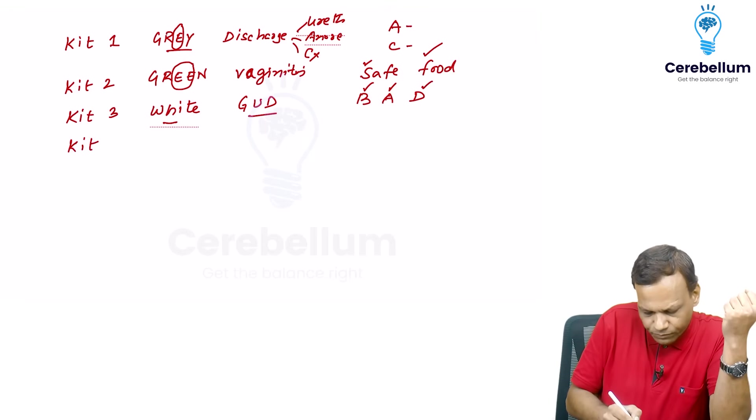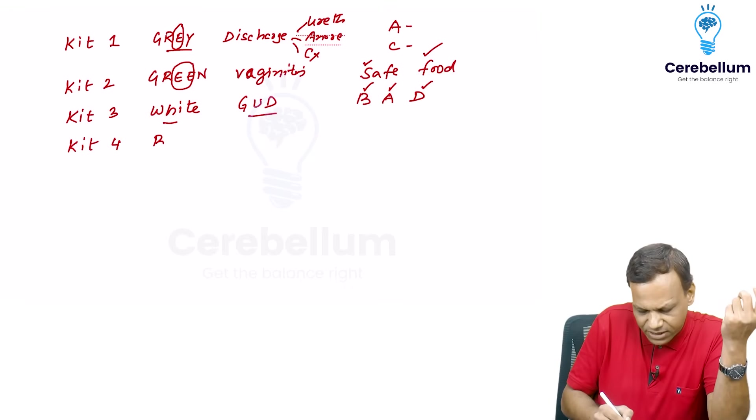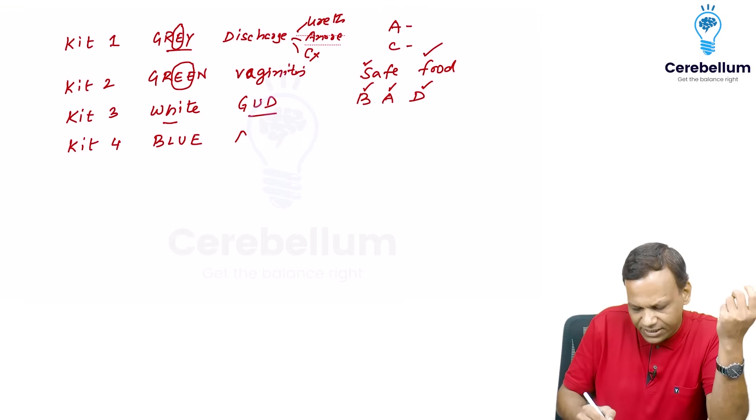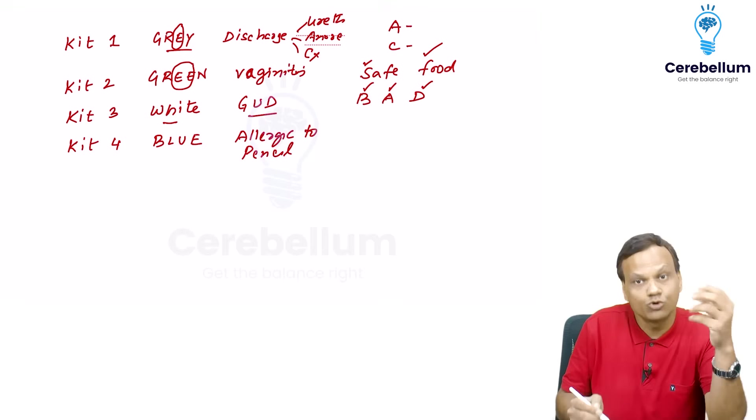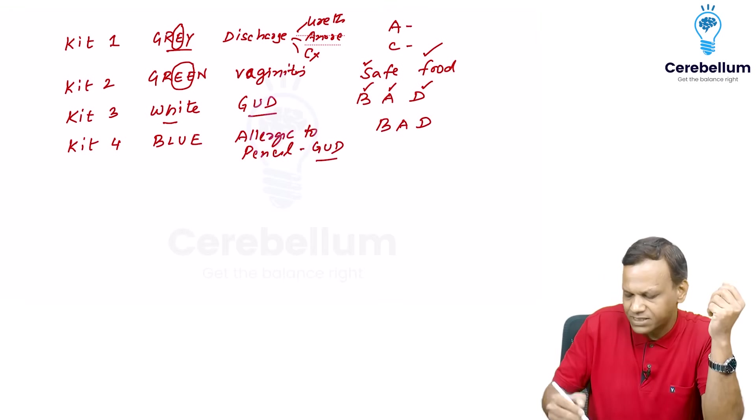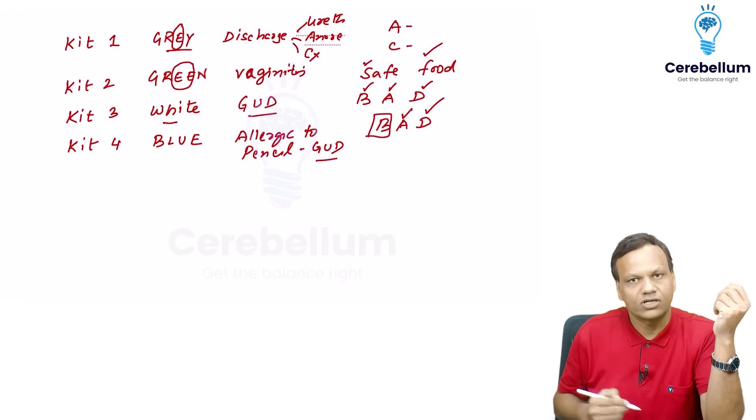Then coming to kit 4. Kit 4. So kit 4, 4 letters is in blue. So kit 4 is blue. And blue when there is allergy. Allergy to pencil. So when there is pencil allergy we will use pen which is blue pen. So again used for good. So when there is good there is something bad. So that means it contains. The blue color contains azithromycin and doxycycline.